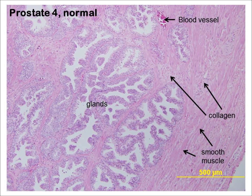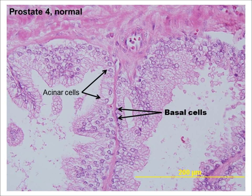Again, at low power, move the slide to the glandular region. Observe the morphology of the glands, which are relatively large and irregularly shaped. The glands are separated from one another by a stroma of collagenous connective tissue interspersed with smooth muscle cells. Switch to higher power and examine the epithelial cells lining the glands. Note that there are two layers of cells: basal cells, which are next to the basement membrane, and acinar cells, which are somewhat columnar. The cytoplasm on the apical end of the acinar cells has a foamy appearance due to the mucin secreted into the lumen. The glands here show a slight hyperplasia, however this is relatively normal.